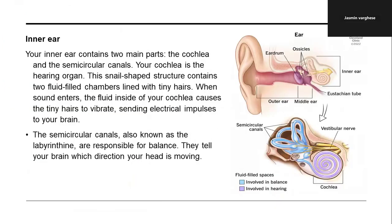Your inner ear contains two main parts: the cochlea and the semicircular canals. The cochlea is the hearing organ — this snail-shaped structure contains two fluid-filled chambers lined with tiny hairs. When sound enters, the fluid inside the cochlea causes the tiny hairs to vibrate, sending electrical impulses to your brain. The semicircular canals, also known as the labyrinthine, are responsible for balance and tell your brain which direction your head is moving.